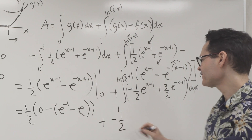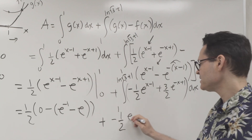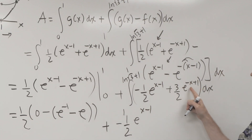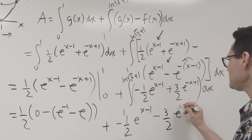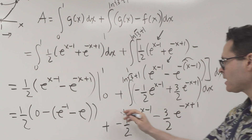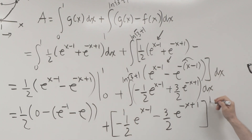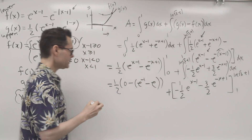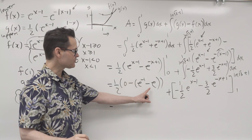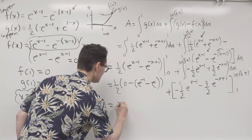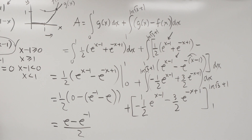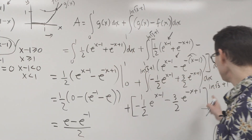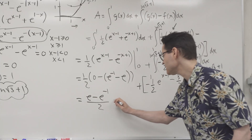Now I'll anti-differentiate the second integral. I've got −(1/2)e^(x−1), and picking up a negative from the inside function: −(3/2)e^(−x+1). This is evaluated between ln(√3)+1 and 1. Bringing the negative through: that's e − e^(−1), giving (e − e^(−1))/2.